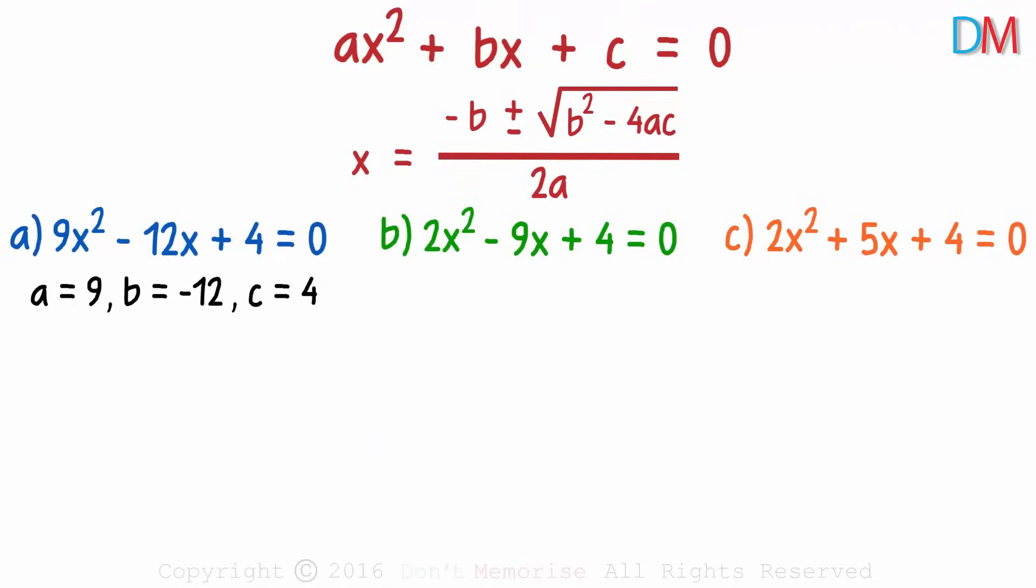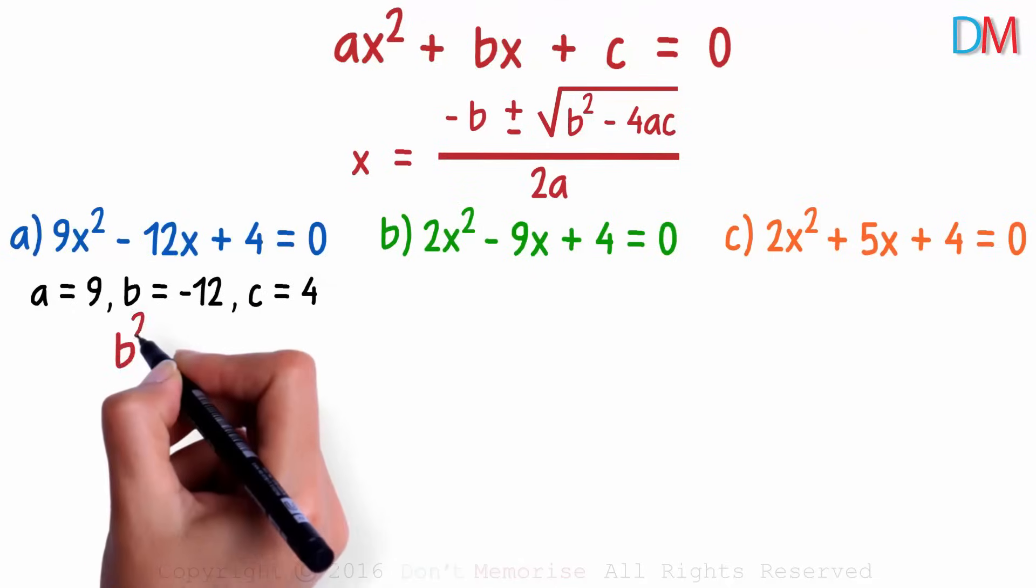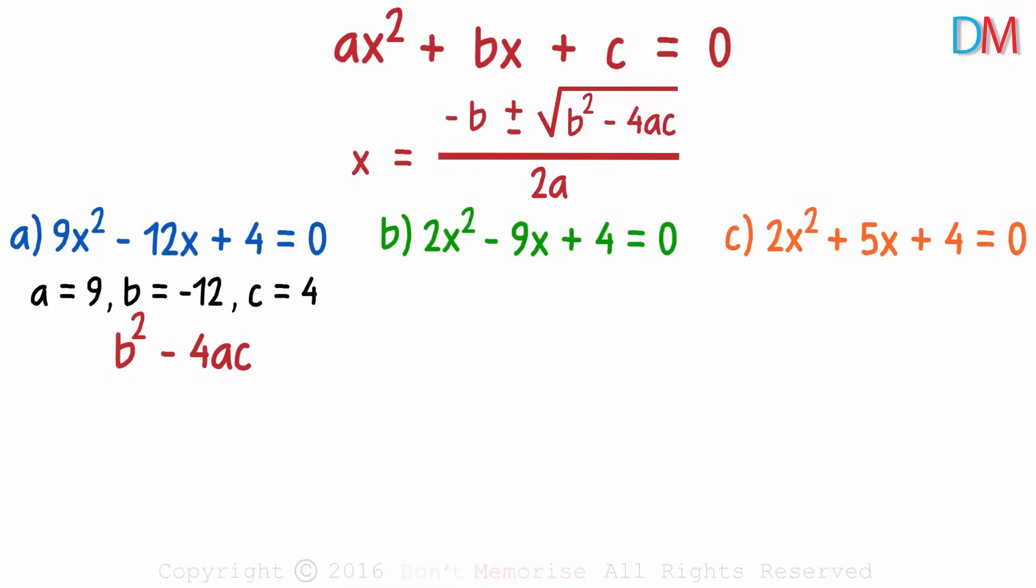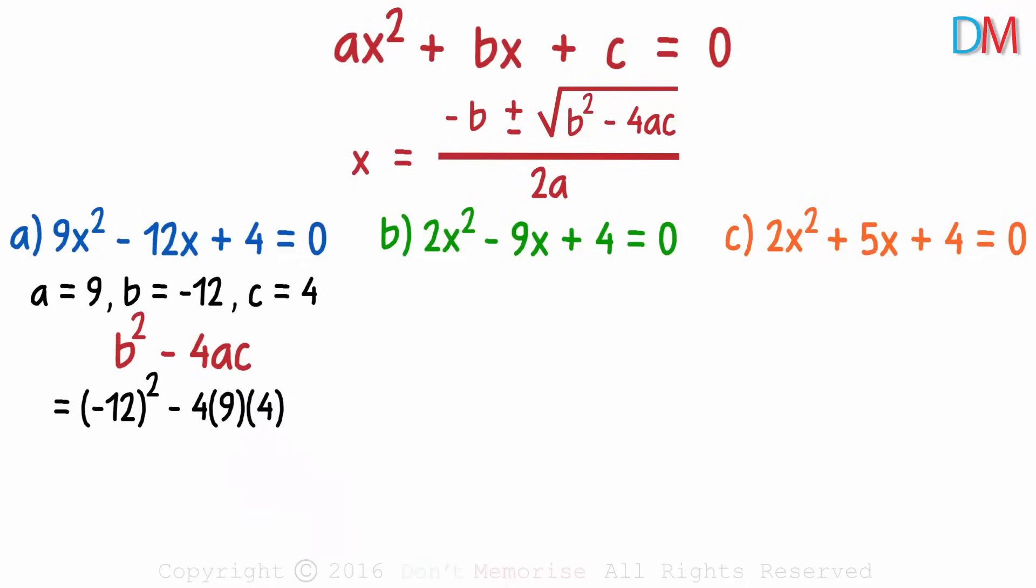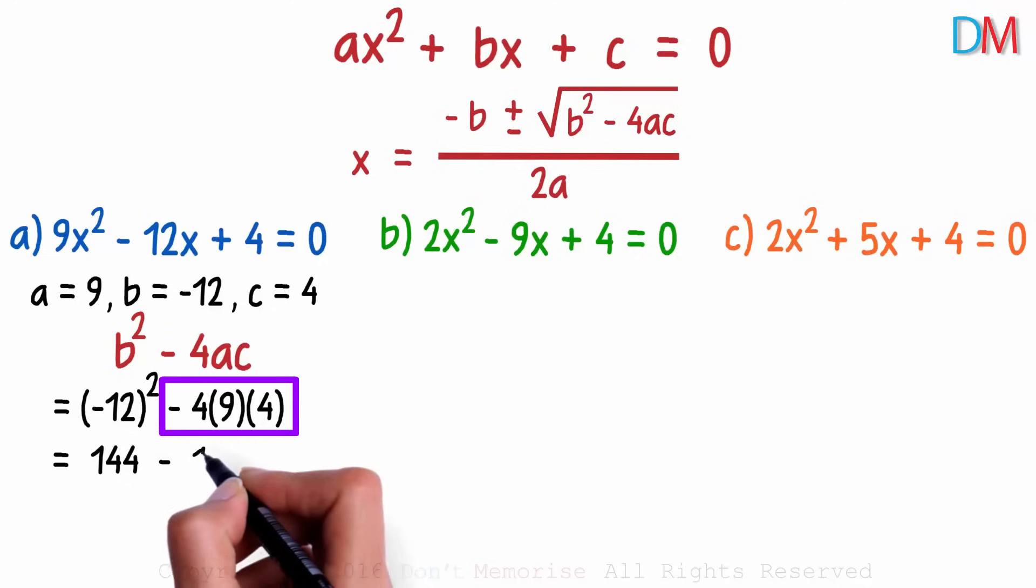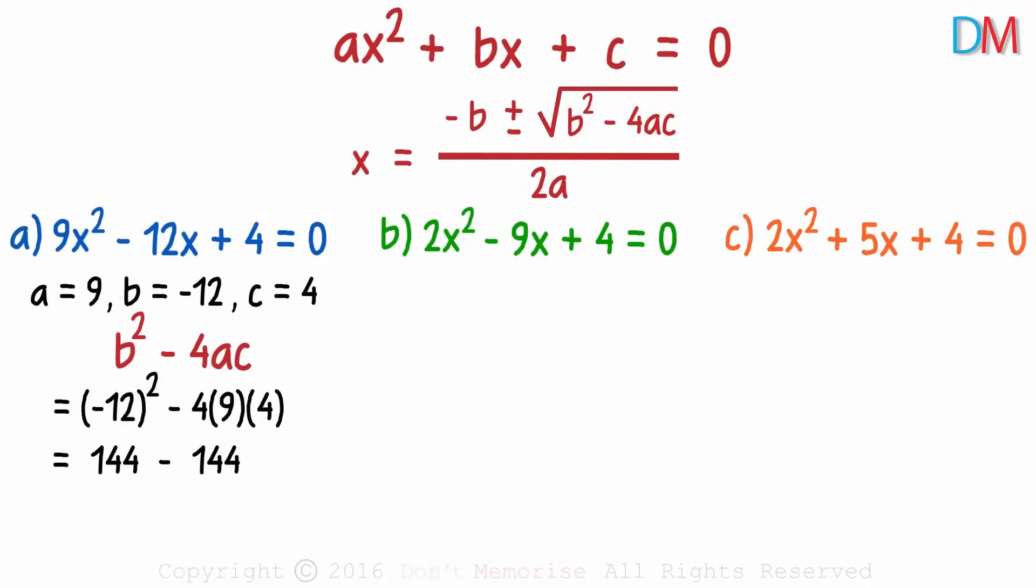Now it's easy to calculate the value of b squared minus 4ac. It will equal negative 12 squared minus 4 times 9 times 4. We get the value of the discriminant as 0.